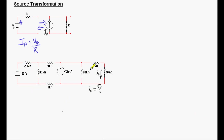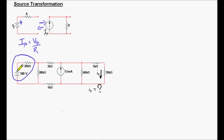Let's observe our circuit — we are not going to touch the right side. Is there any way we can combine the 20k and the 80k resistors? No, we cannot. Is there any other resistor combination here besides those two? No, we don't see anything. So the best thing to do right now is to apply source transformation. If we apply source transformation on this side, on those two components, we can change to a current source and a parallel resistor. Once we have the parallel resistor, we can combine it with the 80k resistor. So let's do it.